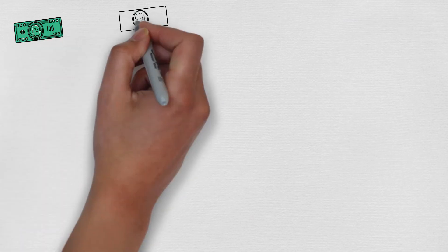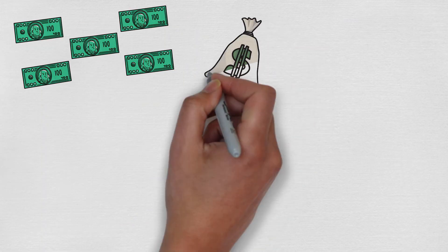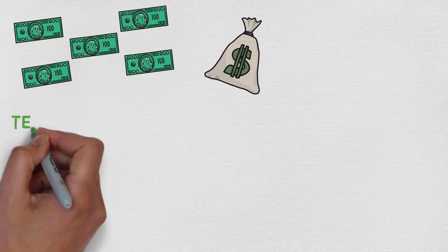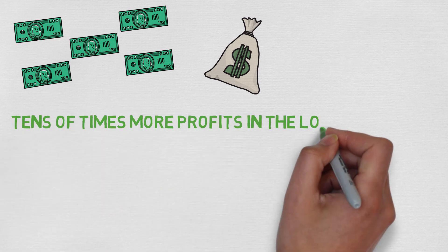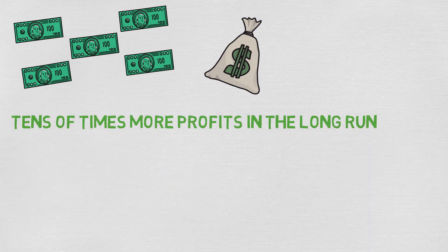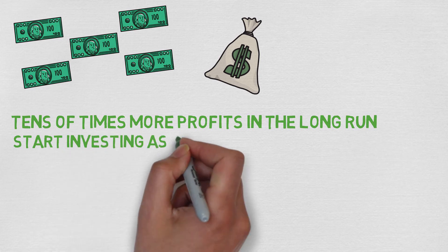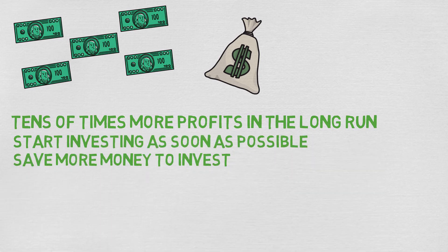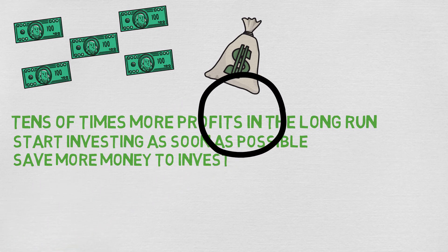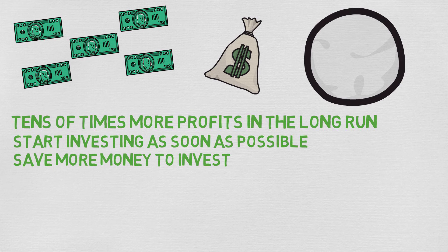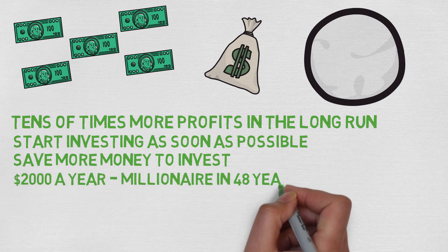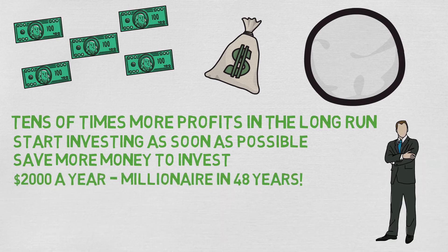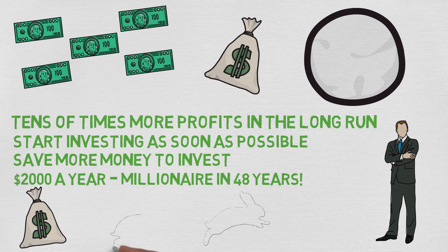So that is how you turn your 500 dollars into tens of thousands of dollars and the reason why you should reinvest your profits — they will be worth tens of times more than simple interest in the long run. The most important thing is to start investing as soon as possible and to start saving money to invest more every year. Invest 2,000 dollars a year and become a millionaire in 48 years. The more you save and invest, the quicker you become a millionaire.